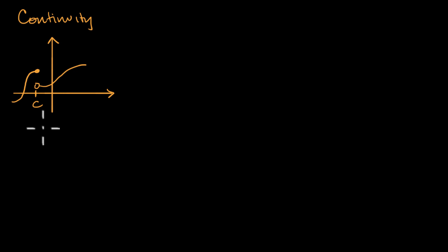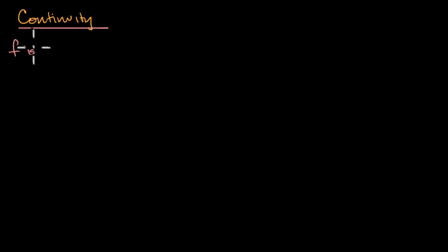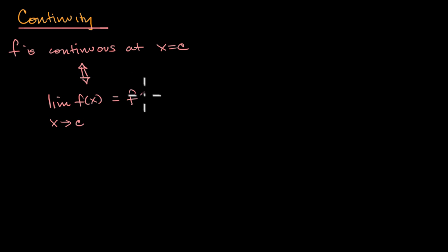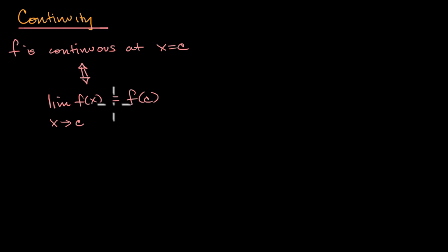But let's actually come up with a formal definition for continuity and see if it feels intuitive. So the formal definition: we'll start with continuity at a point. We could say the function f is continuous at x equals c if and only if the two-sided limit of f(x) as x approaches c is equal to f(c). It's saying: if the limit as we approach c from the left and the right equals the actual value of our function there, then we are continuous at that point.